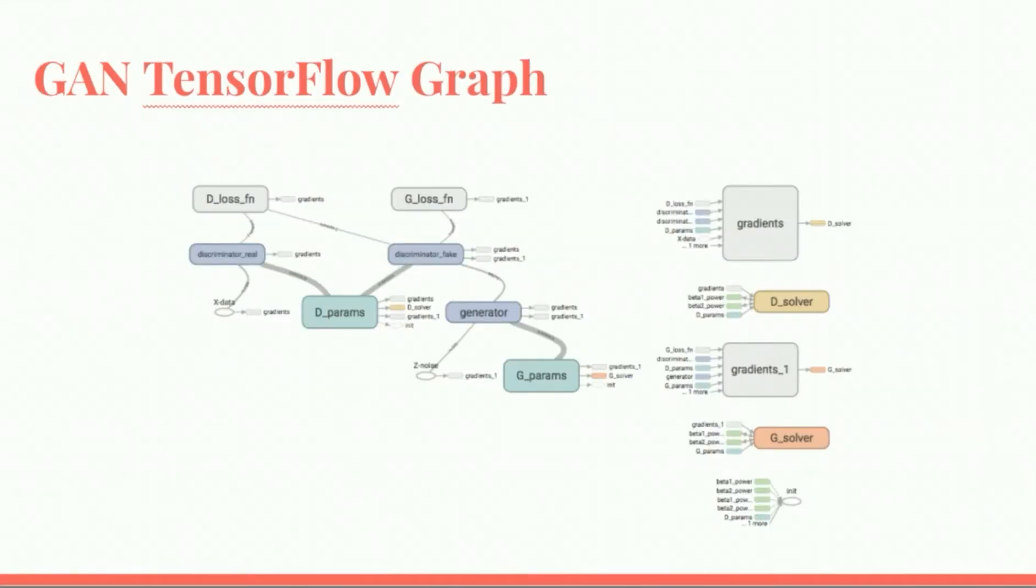We generated a TensorBoard graph of the GAN to highlight the important components of the network, shown here. D params and G params are the weights and biases for the discriminator and the generator network, respectively. We have our D loss function and our G loss function, which are the respective loss functions. We also have a discriminator given real data versus a discriminator given fake data.